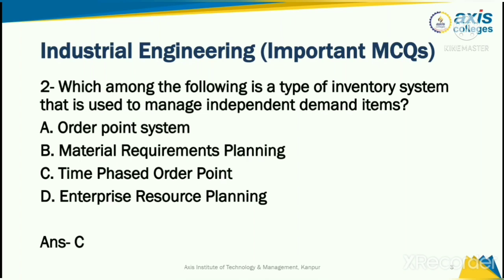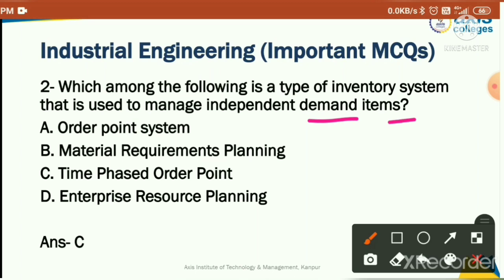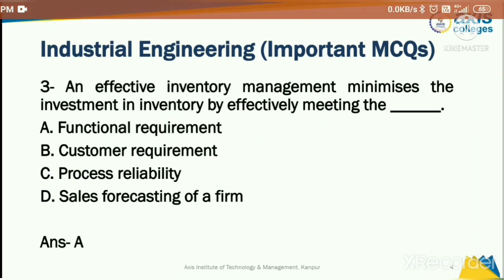Which among the following is a type of inventory system used to manage independent demand items? Options are: order point system, material requirements planning, time phase order point, or enterprise resource planning. The correct answer is time phase order point. Remember that the correct answer is time phase order point.